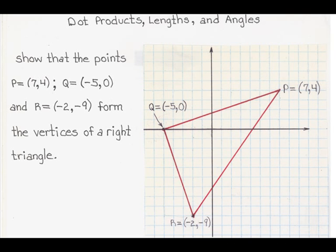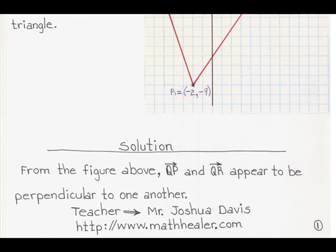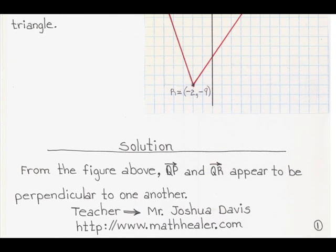I will assume that you just paused the video and copied the problem and the diagram. Let's move forward, ladies and gentlemen. So the beginning of the solution: from the figure above, QP and QR appear to be perpendicular to one another. Let's go back and take a look — yes, they do appear to be perpendicular, but we will now have to prove it.